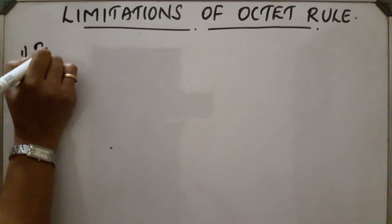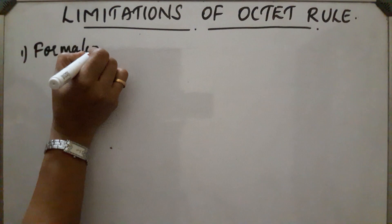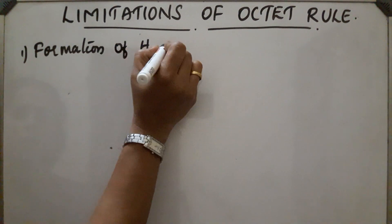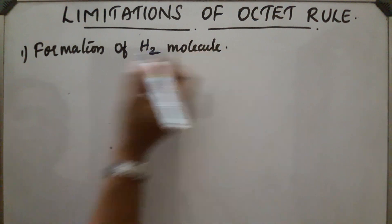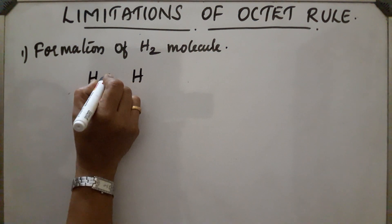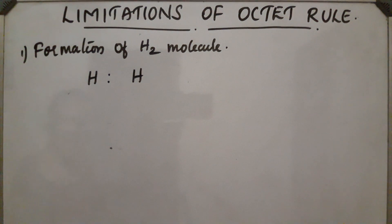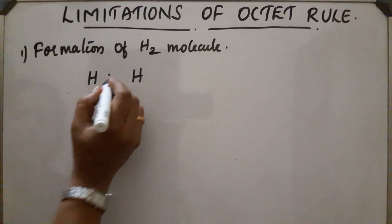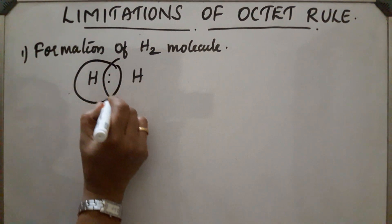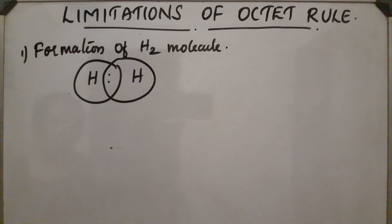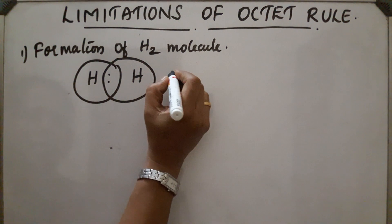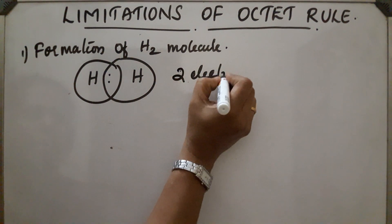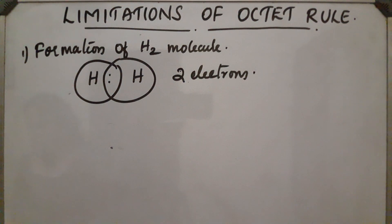The first exception is the formation of the hydrogen molecule, H2. Each hydrogen atom contains one electron, and it needs only one more electron to fill its shell. So the electronic configuration of the hydrogen molecule shows that, instead of an octet, it needs only two electrons to complete its shell. With two electrons, the hydrogen molecule achieves a stable configuration. This is an exception from the octet rule.